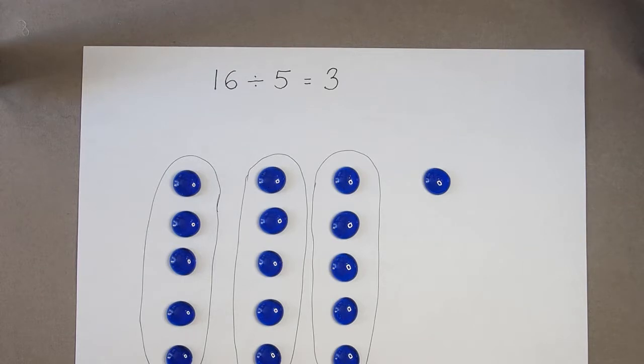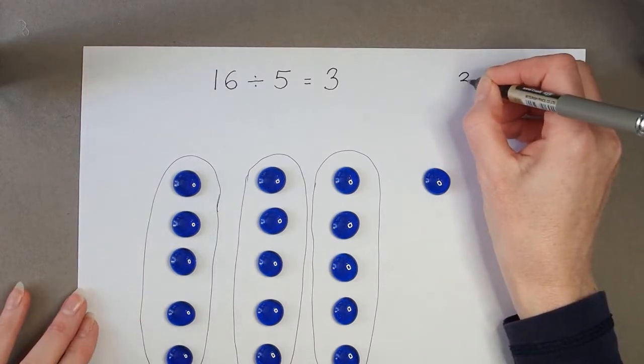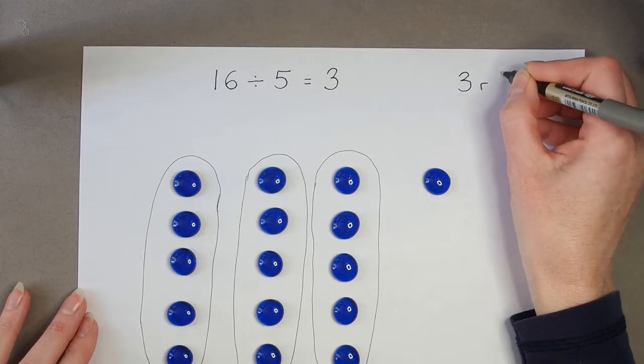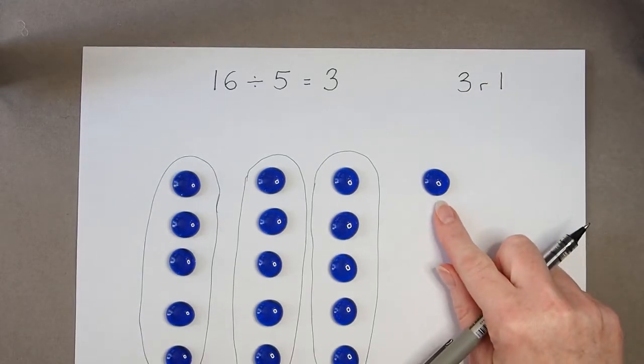So 16 divided by 5 is 3. Now if I was going to write this as a remainder I would write 3 remainder 1 because I've got that 1 left over.